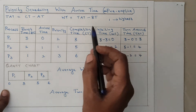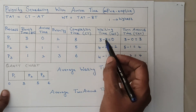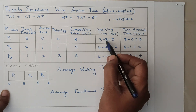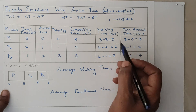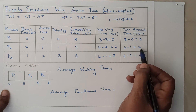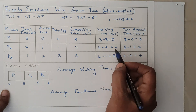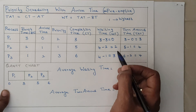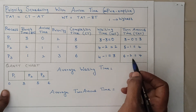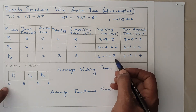Now for waiting time: waiting time = turnaround time minus burst time. For P1: 3 minus 3 equals 0. For P2: 4 minus 2 equals 2. For P3: 4 minus 1 equals 3.